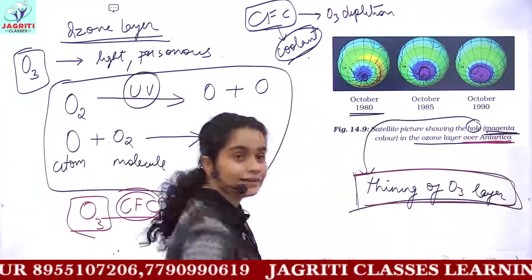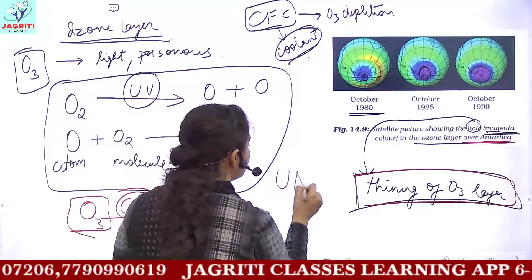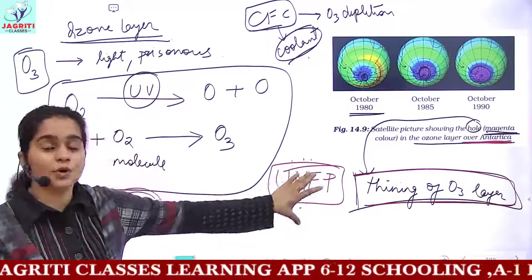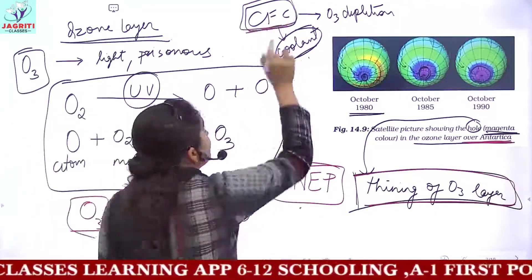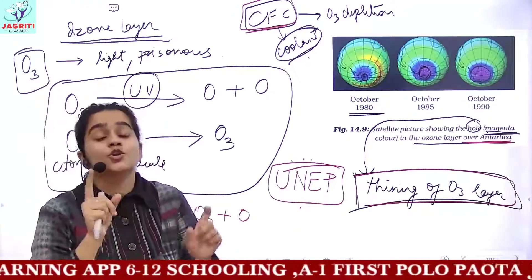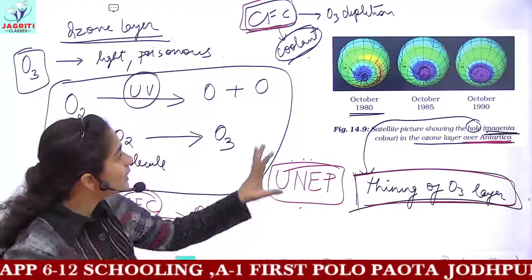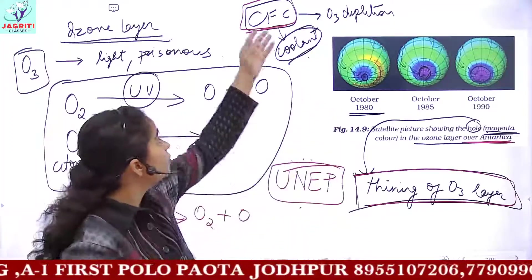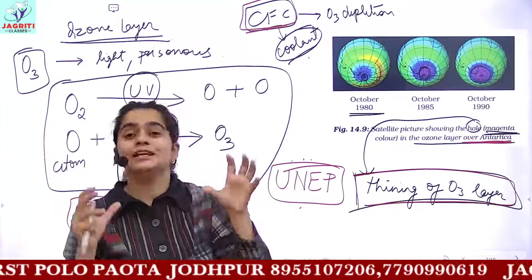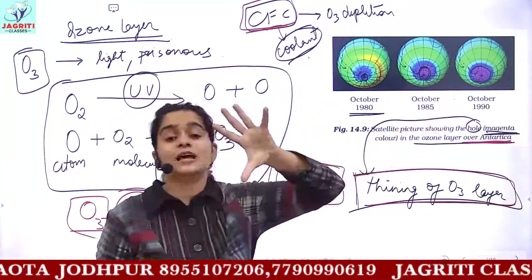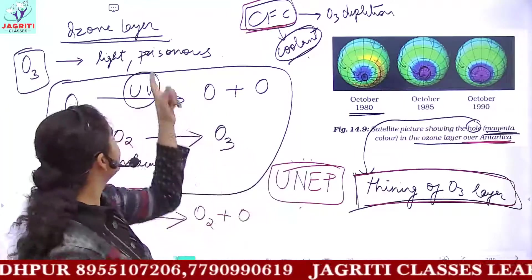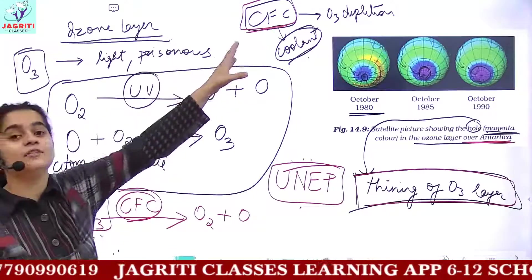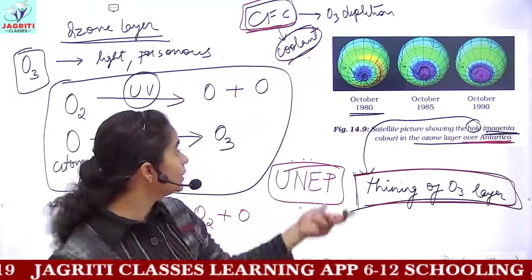To address ozone depletion, a policy agreement called UNEP was signed, under which it was stated that no more CFCs should be released — the amount of CFC released should be regulated and controlled. With advanced technology, CFC-free ACs and refrigerators are now available. The amount of CFC being released has been controlled and regulated, and as a result, the increasing hole size has also been controlled.